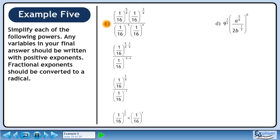Bring up the denominator and change the sign of its exponent. We are multiplying powers at the same base, so add the exponents. We can get a common denominator of 2 in the exponent. Add the fractions in the exponent to get 3 over 2.